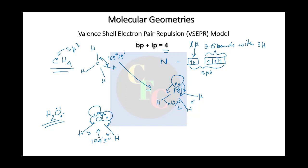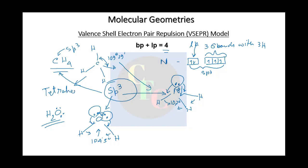So in all these cases, the hybridization is the same — it's sp3 — but the molecular geometries are different. In CH4 it is tetrahedral, in NH3 it is trigonal pyramidal, and in H2O it is V-shape or bent.